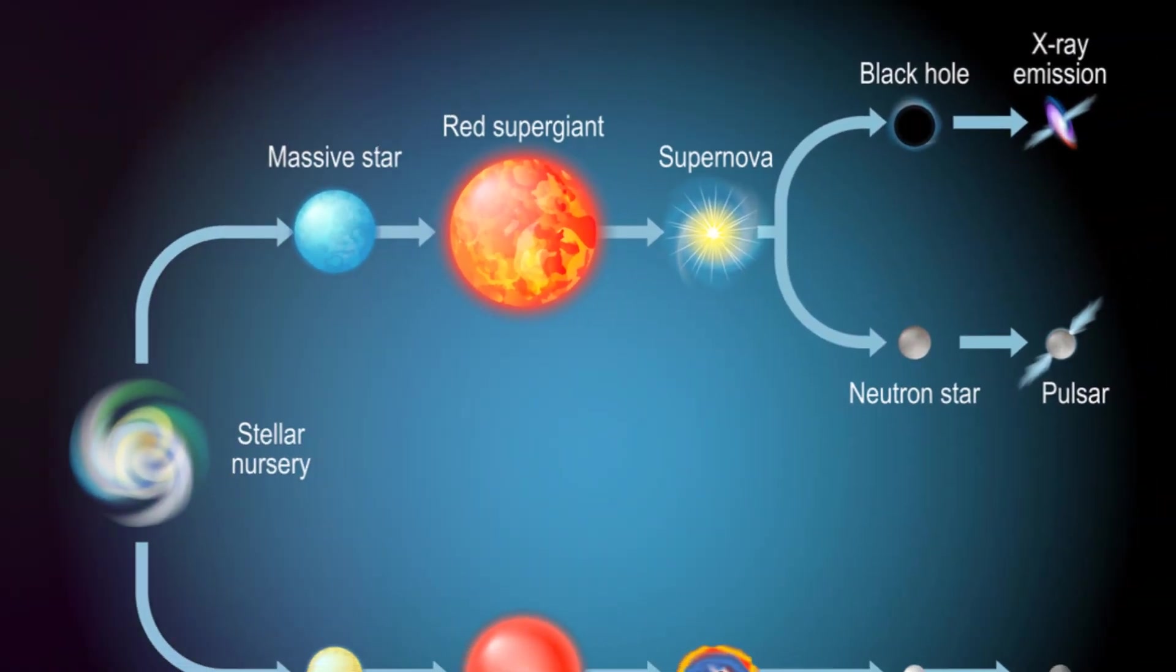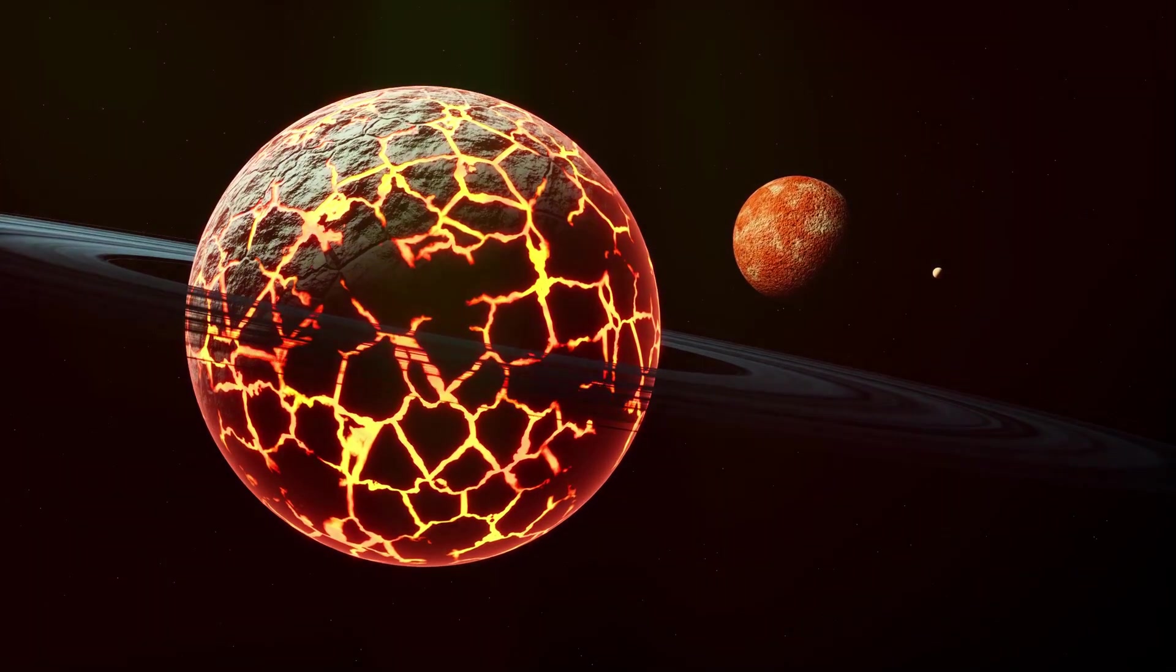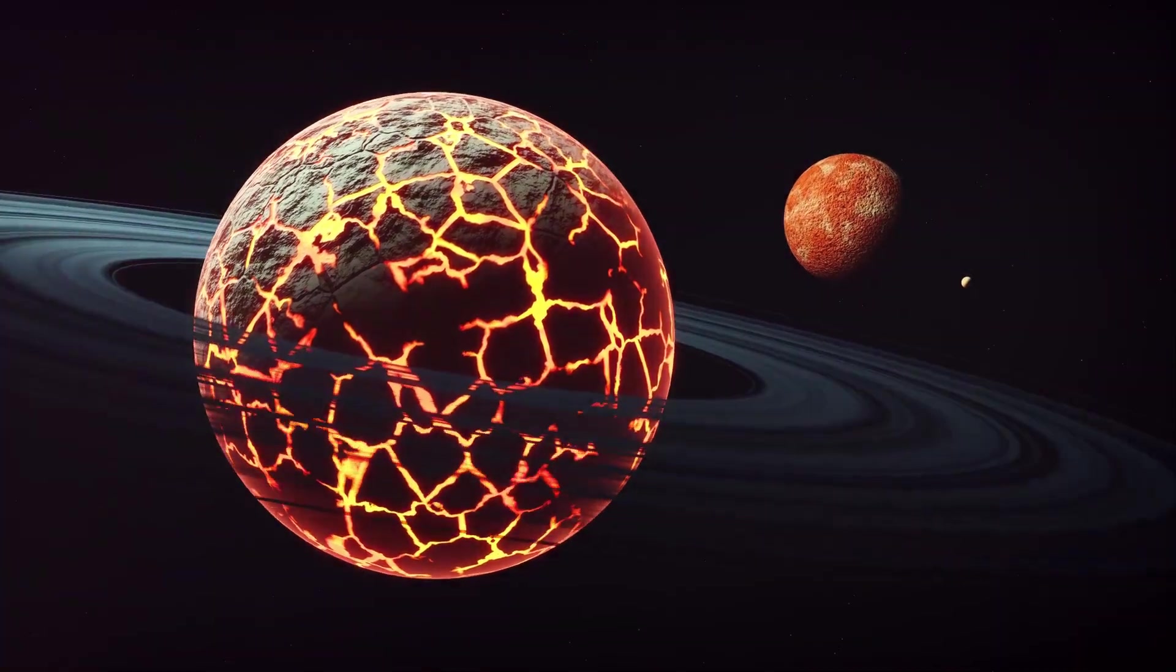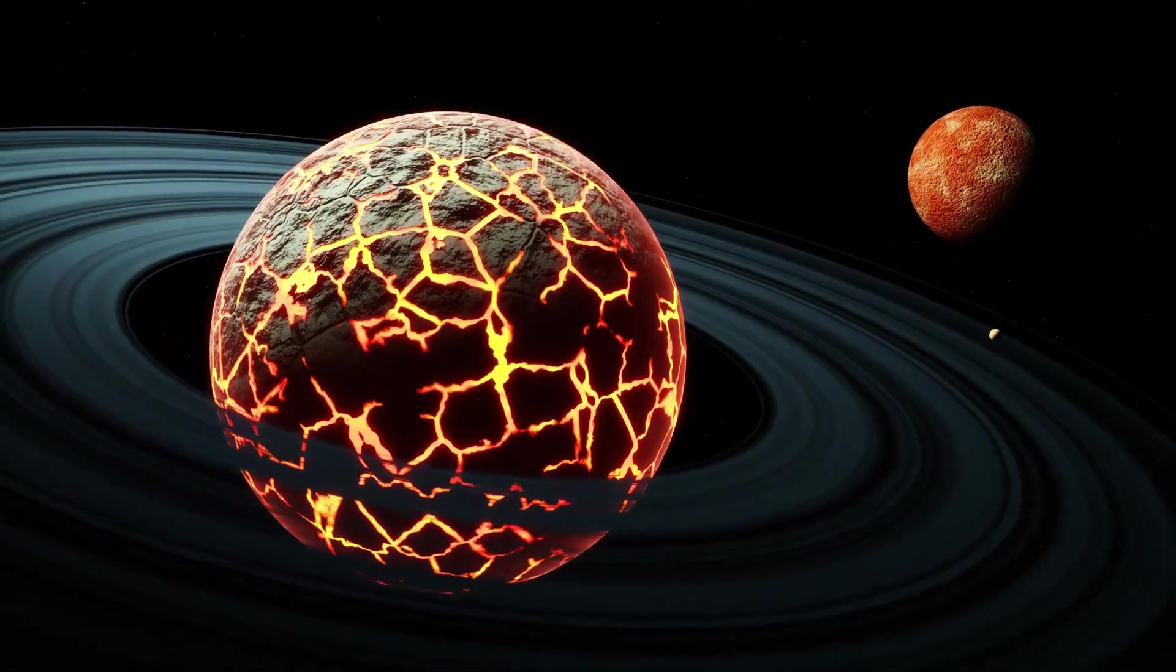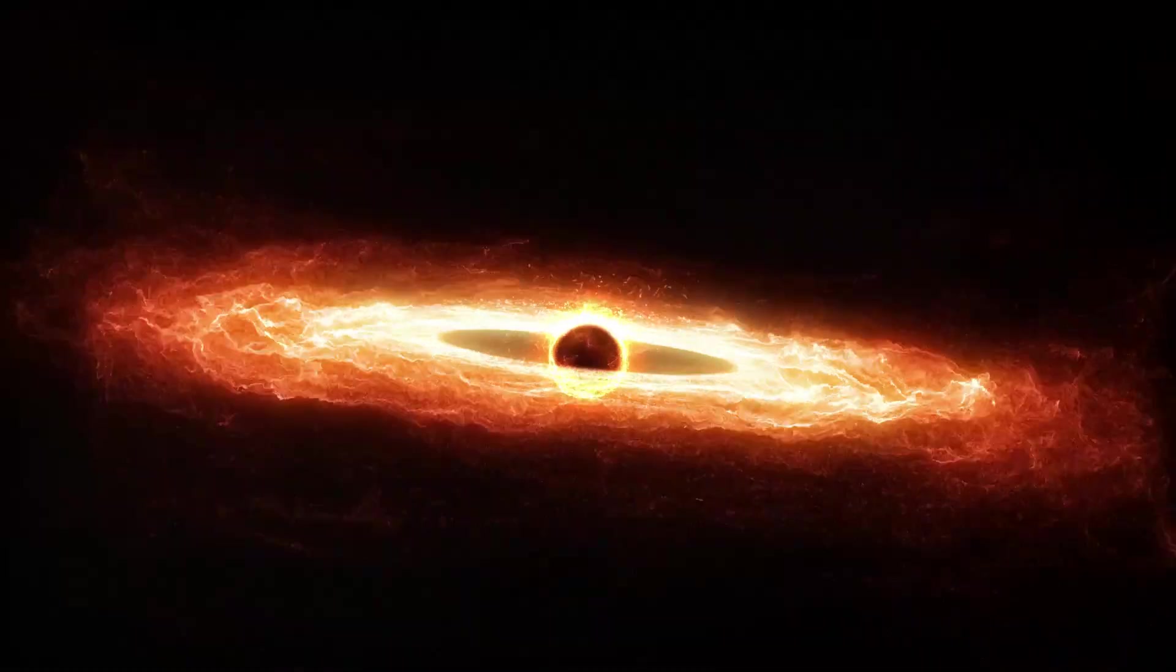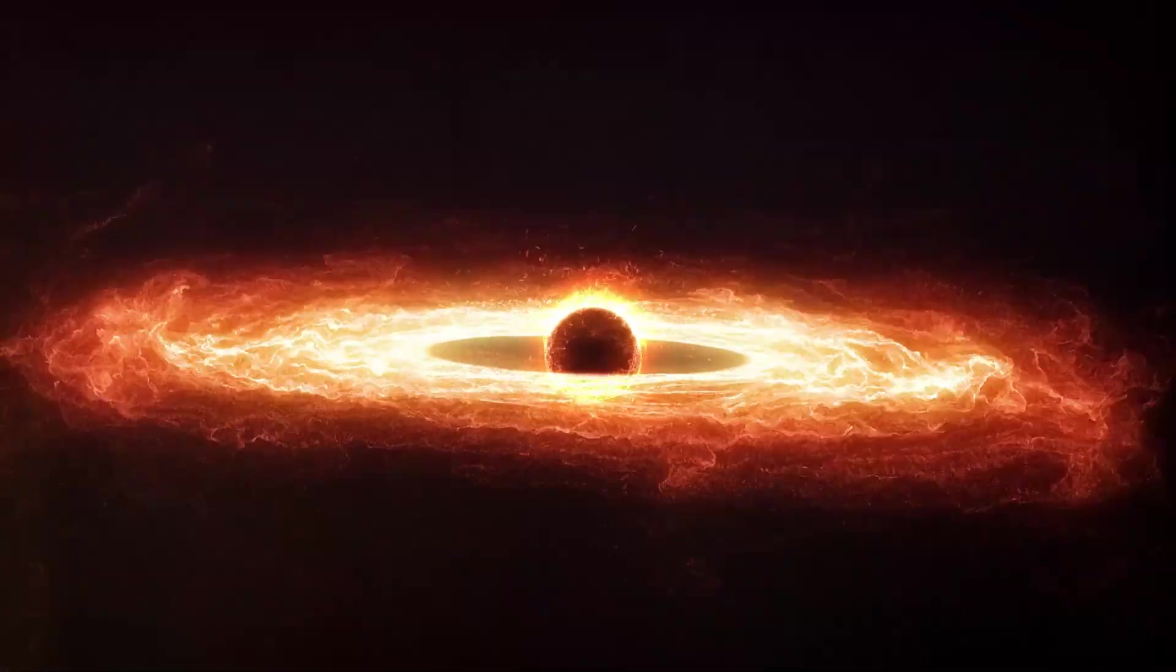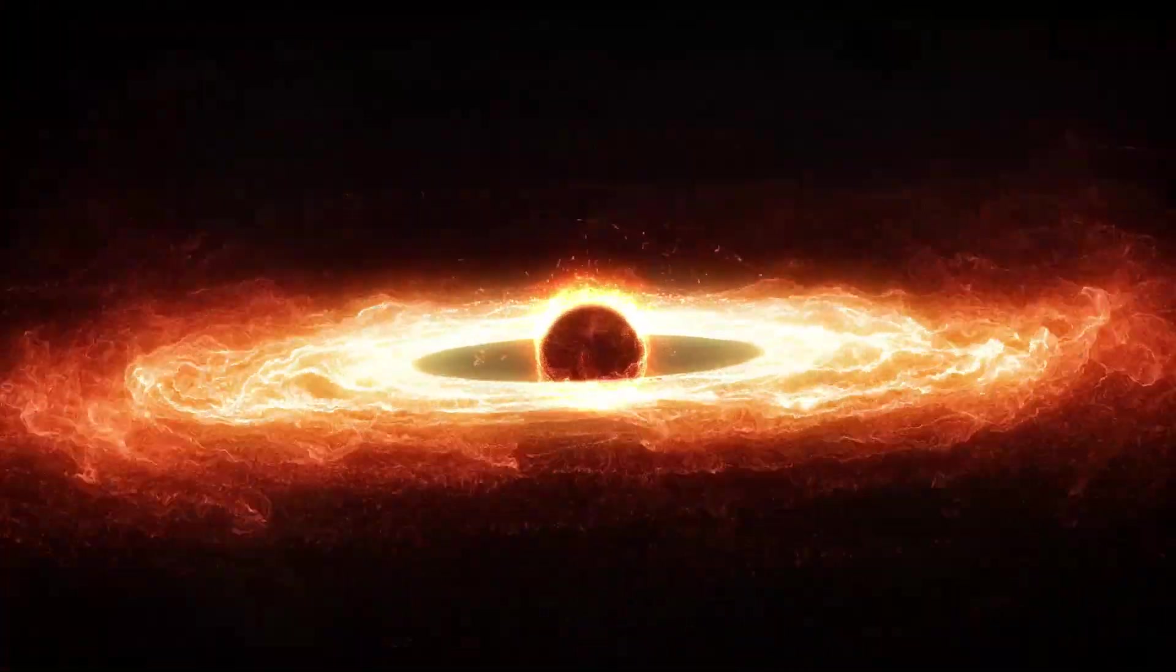As this remarkable star ages, it exhausts its nuclear fuel. The pressure from the nuclear reactions, which has been keeping the star's gravity at bay, decreases. The outer layers of the star start to expand, creating what we call a red supergiant.